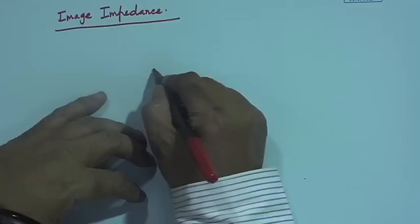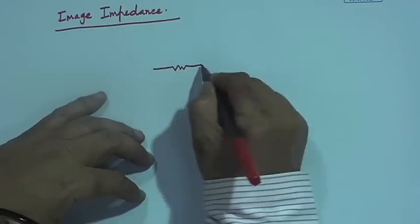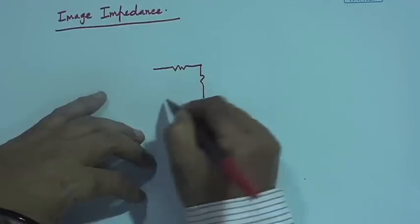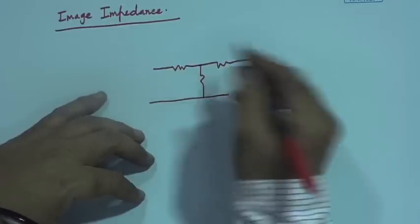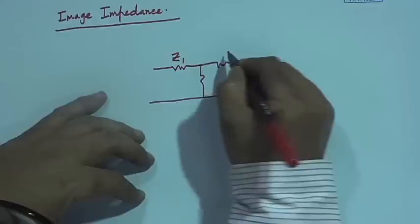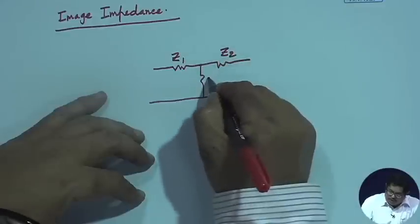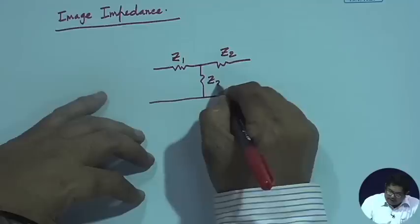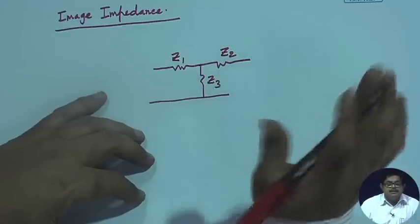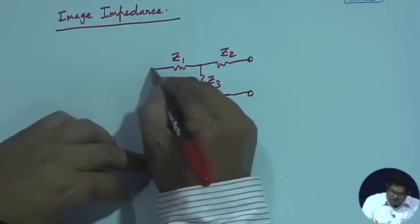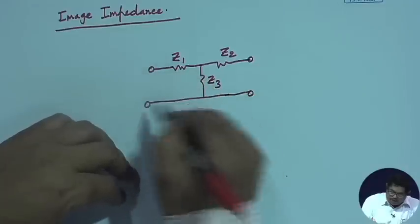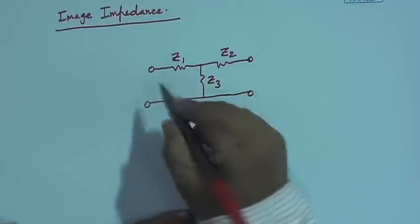I have that T-section. This is Z1, this is Z2, this is Z3 — all these are complex impedances. This is my port 2, this is my port 1, and this is the internal description of the network.